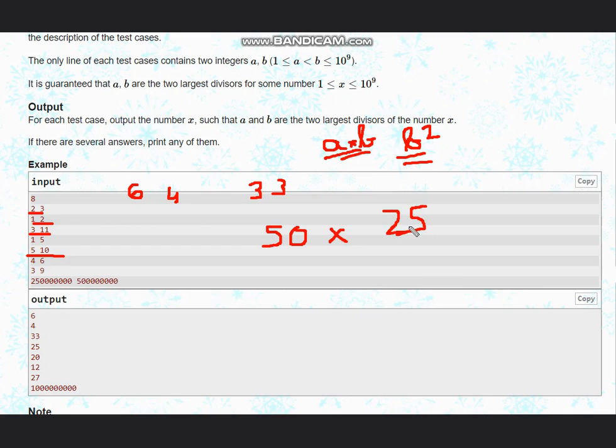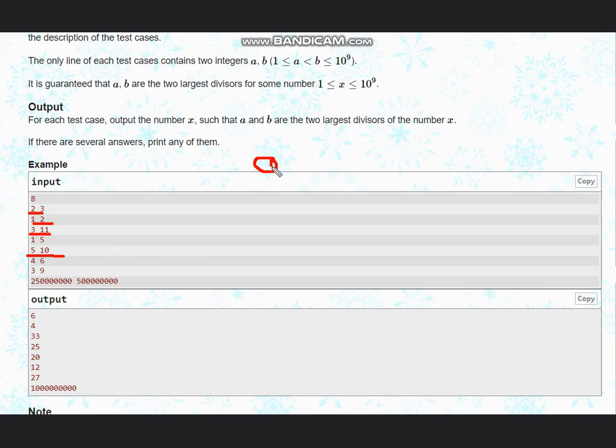These two will not be the largest divisors in this case. So in the case where we do not have any common divisor, like we have 2 and 3, 1 and 2, 3 and 11, and so on, then the answer is simply a × b. For this case it works.